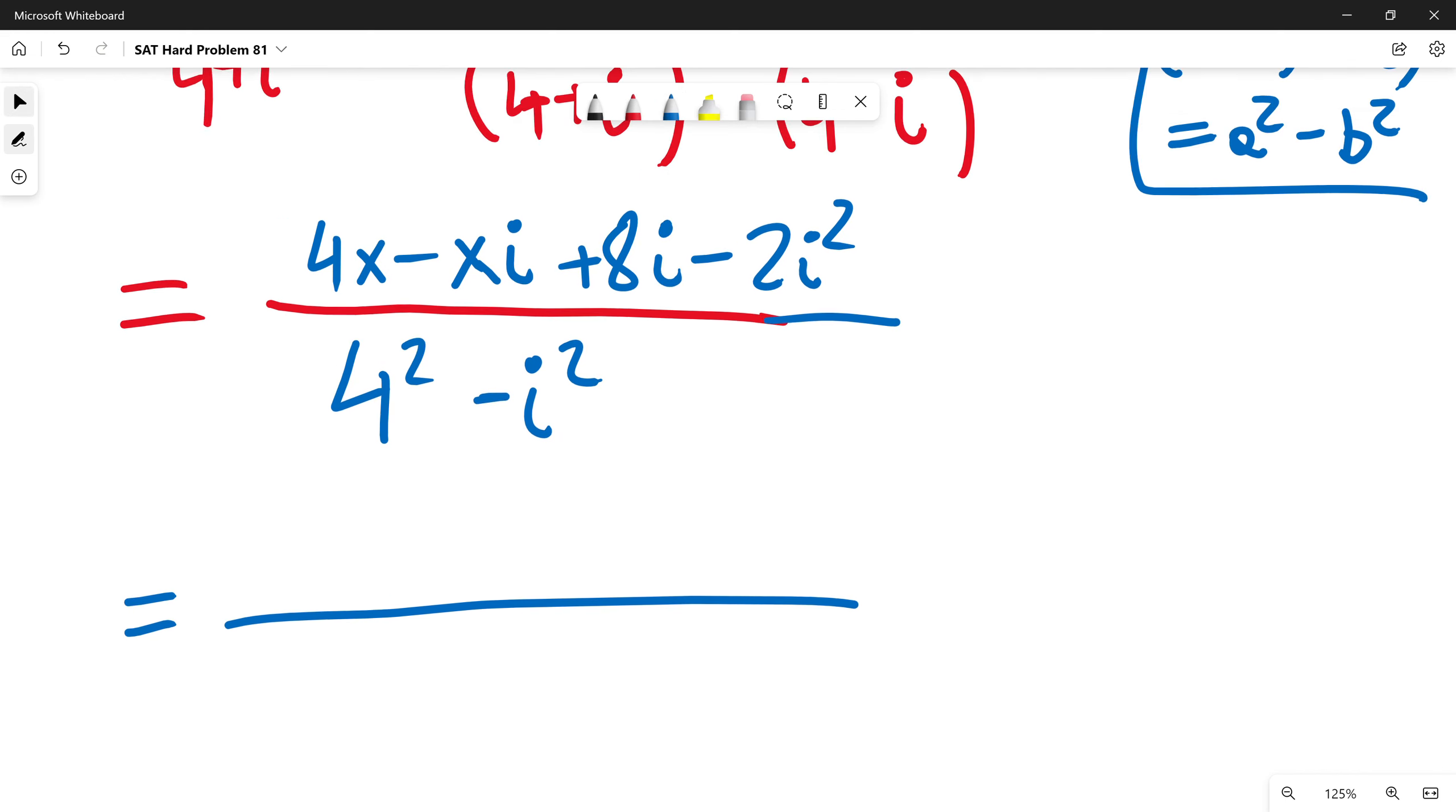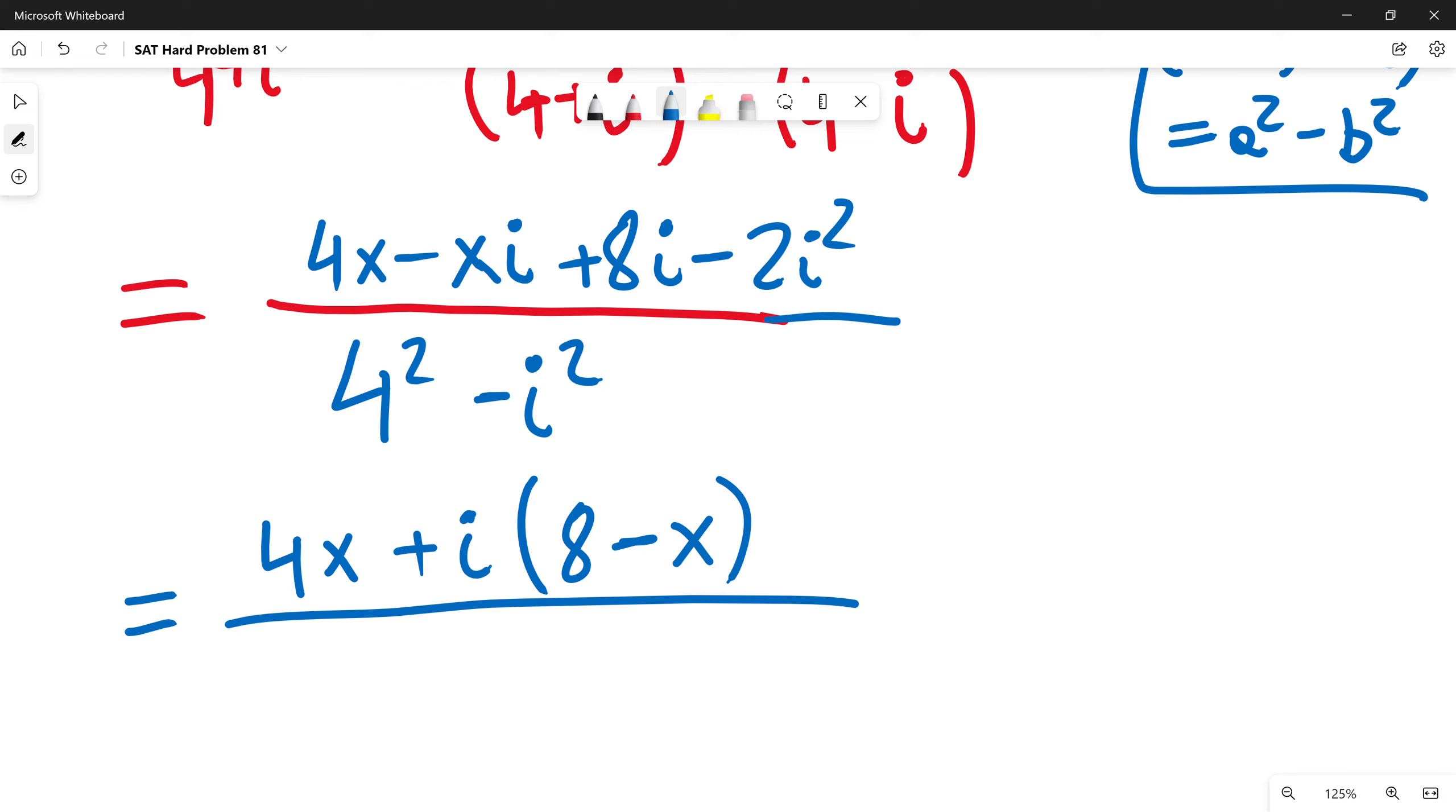Then, in numerator, I will just put i in front of bracket and in the bracket will be 8i minus xi. So, it will be 8 minus x minus 2i squared is left.